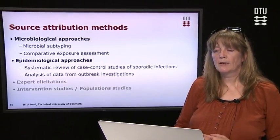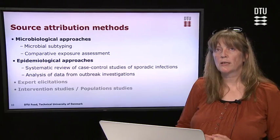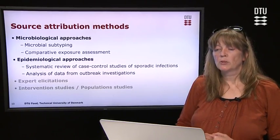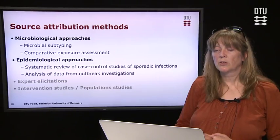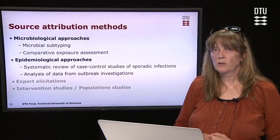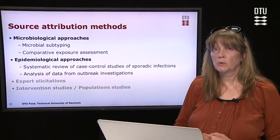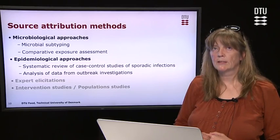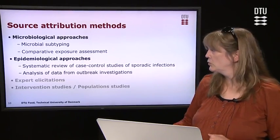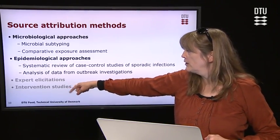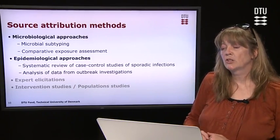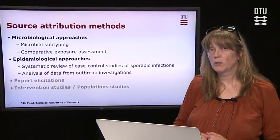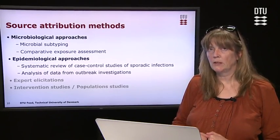Source attribution methods can be divided into microbiological approaches and epidemiological approaches. The microbiological approaches concern microbial subtyping and also the comparative exposure assessment. The epidemiological approaches concern systematic review of case-control studies of sporadic infection and also analysis of data from outbreaks. Expert elicitation and intervention or population studies can also be used for source attribution, but they will not be covered here — you can read more about them in the suggested reading.